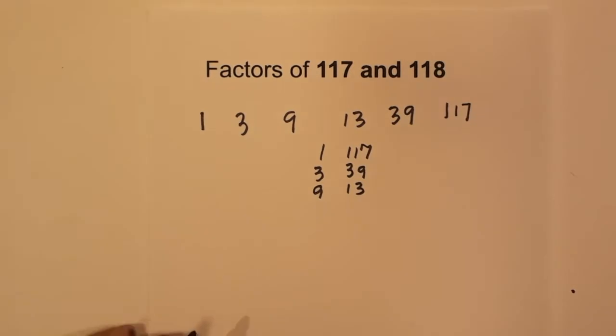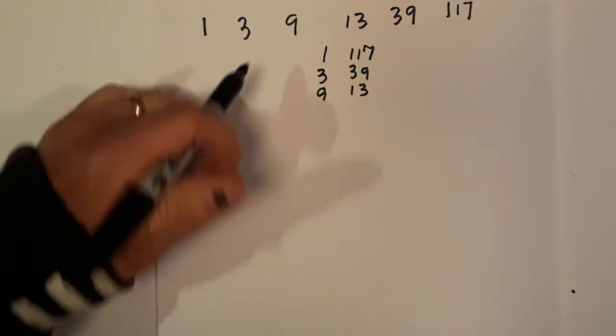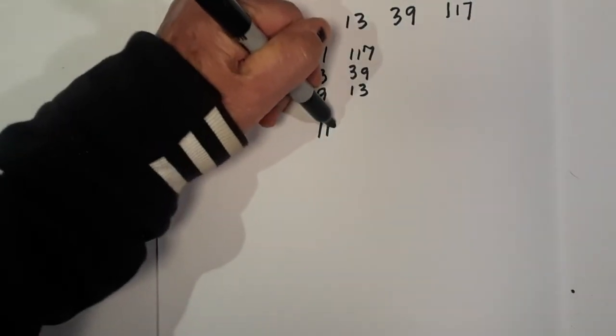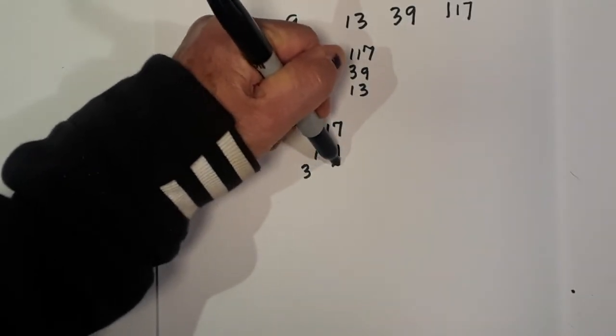Now let's complete a factor tree for the prime factorization. Let's begin with 117. 3 goes into 117 39 times.